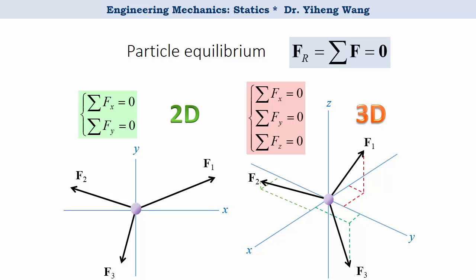However, a rigid body has shape and size, and it is not necessarily static even if the resultant force acting on it is indeed zero. For example, if you recall the moment of a couple,